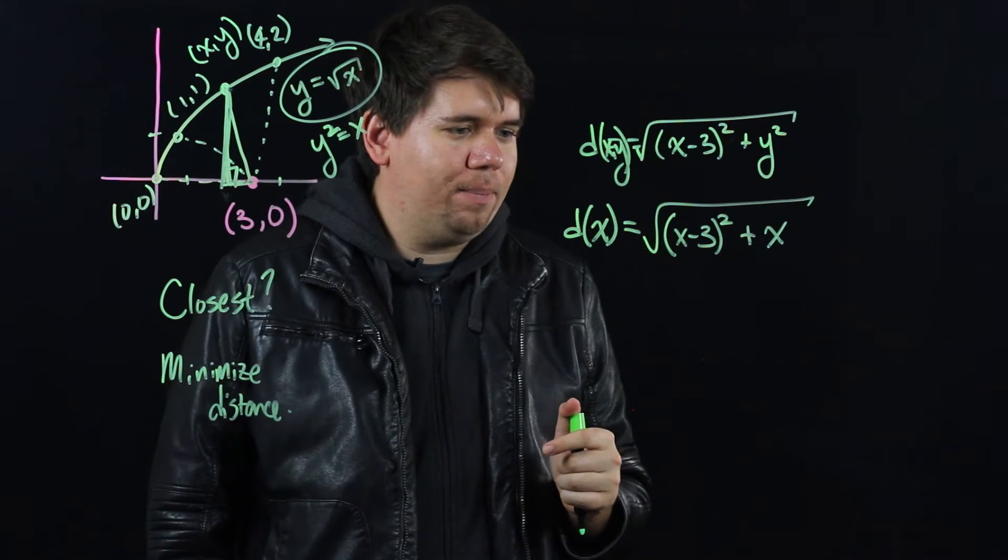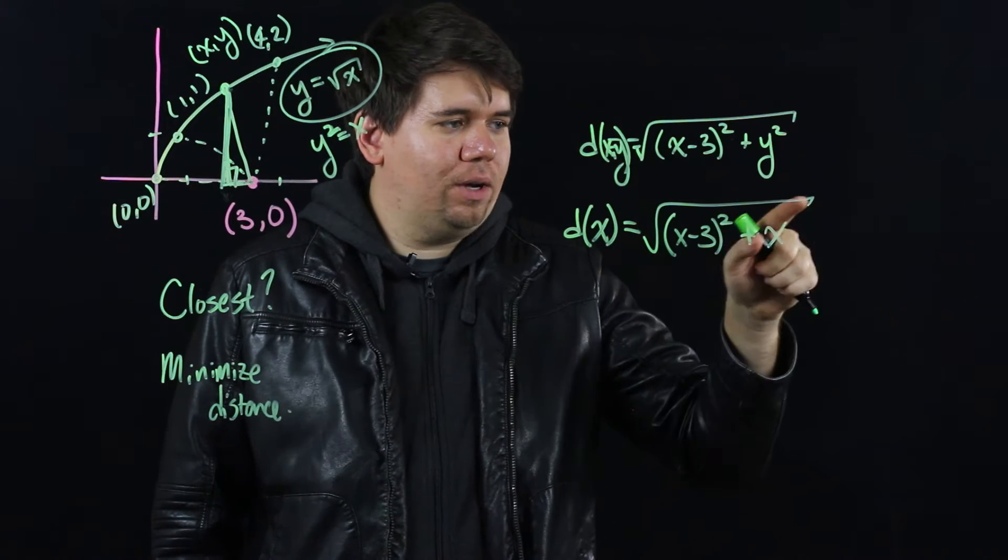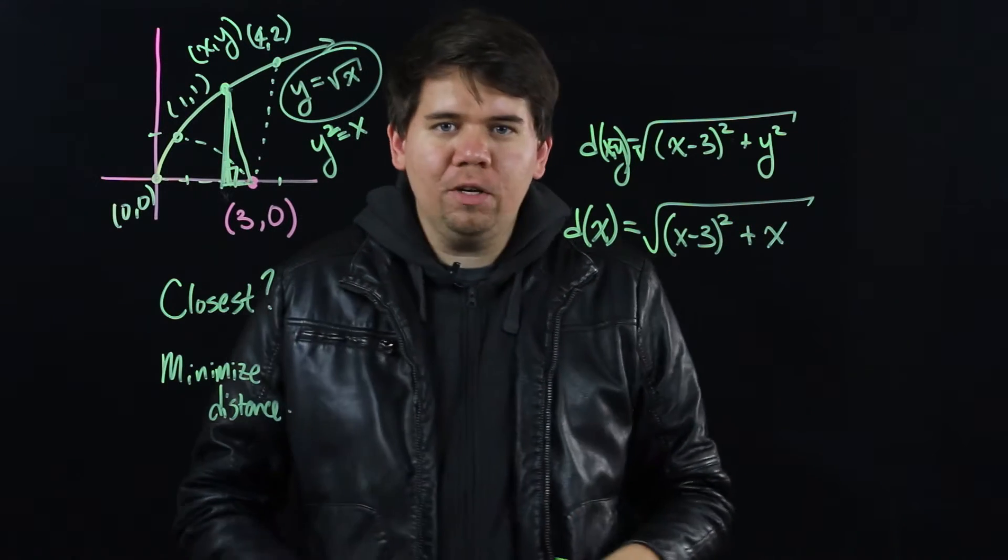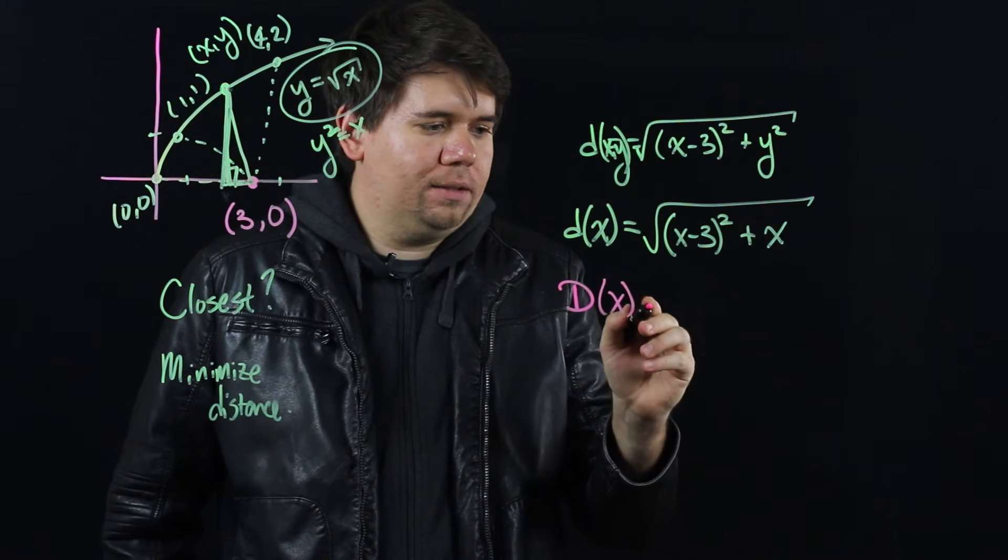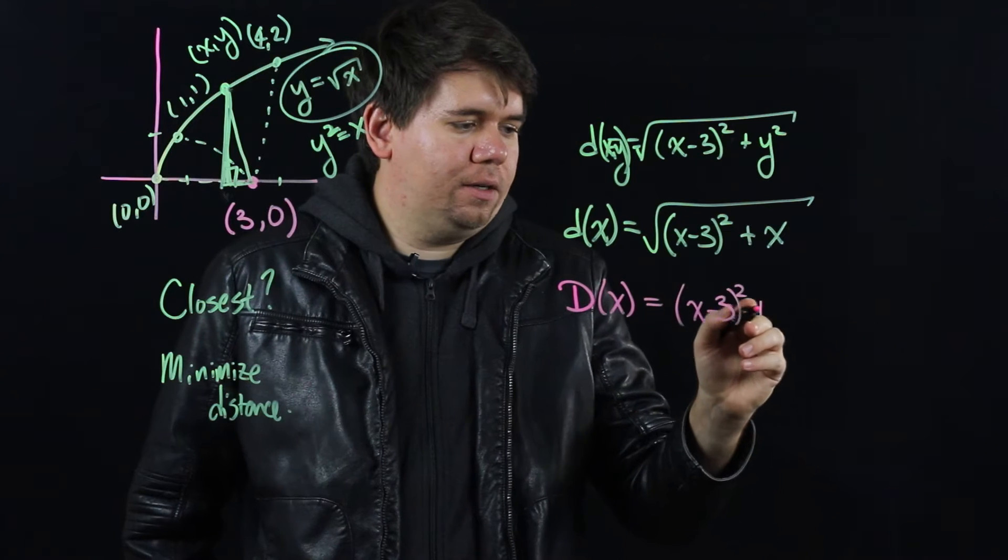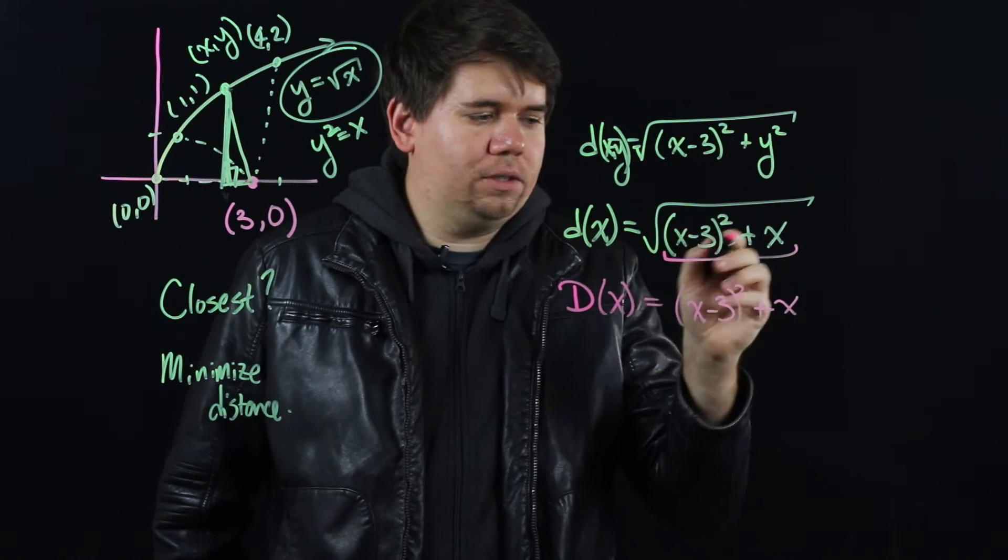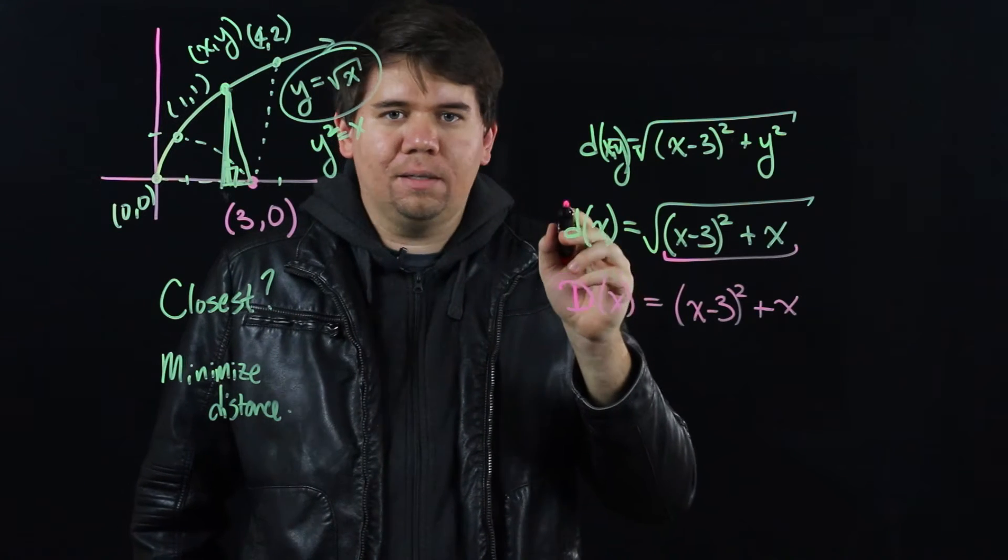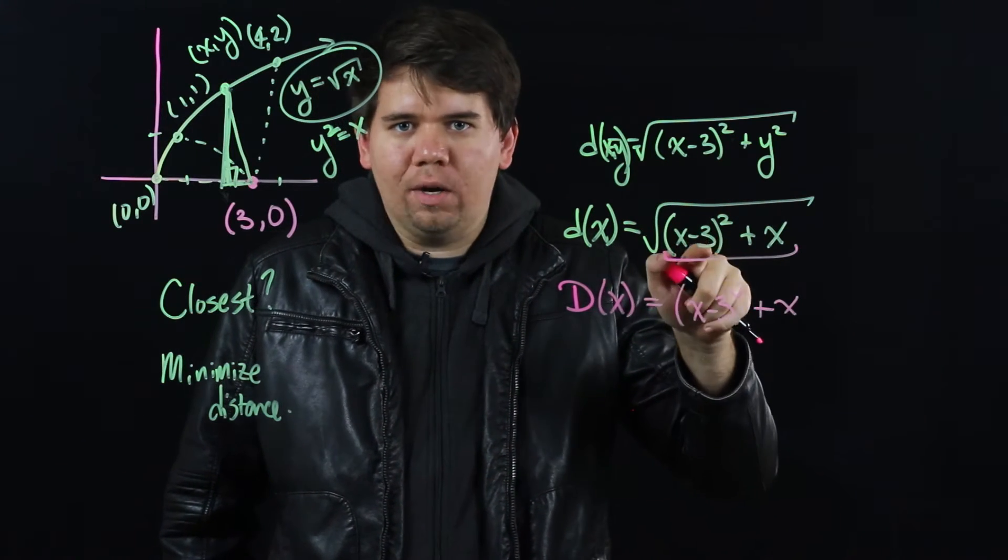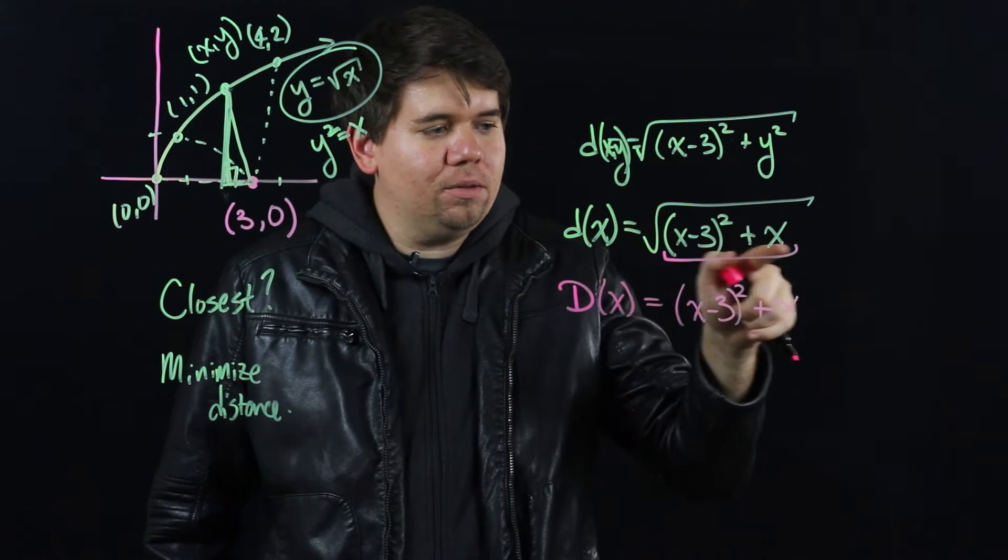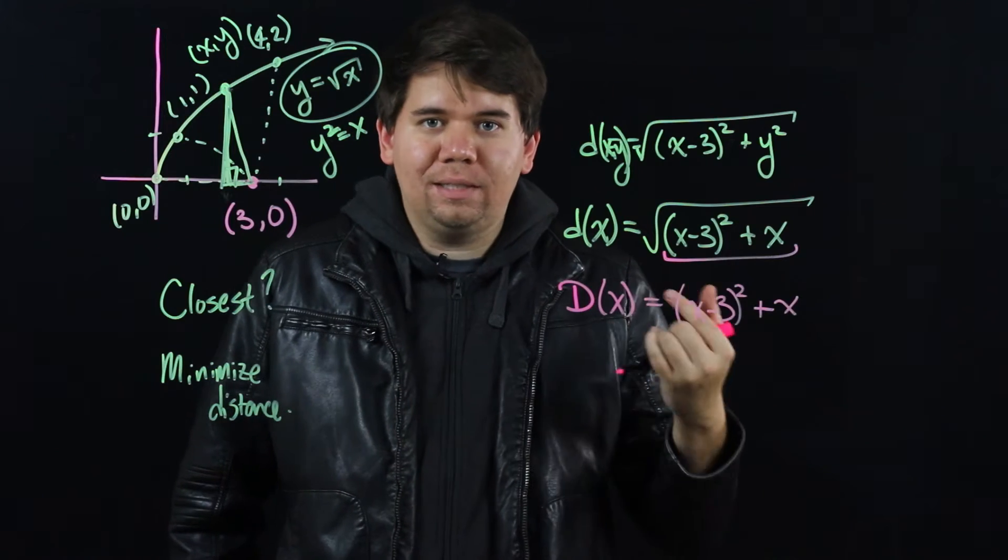But wait, as I start thinking about what's about to happen I realize taking the derivative is going to start getting a little bit messy. After all, whenever I have a square root involved the derivative of that is going to be a little bit gross. So I'm going to make a modification. Instead of thinking about this function I'm instead going to think about the function big D of x, which is just (x-3) squared plus x. Now it's not the same function, it's just the inside of the square root. But notice whenever little d has a minimum so does big D. A square root is at its smallest value when the value you're putting inside is smallest. So instead of trying to minimize this little d function of the square root I can instead just minimize the inside of it.